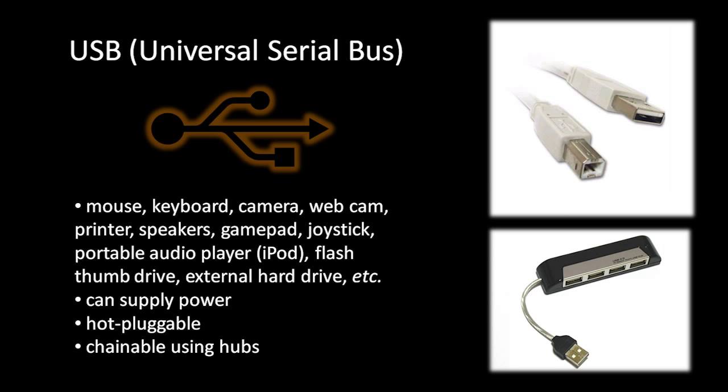Hubs can also come in handy because they can act like extension cords. So for example, if the cords of your mouse and keyboard aren't quite comfortably reaching your computer system, you can solve the problem by using a hub. In fact, it's very common for monitors to have a USB hub built in. So you will have a USB connection running from your computer to your monitor, and then on the side of your monitor you'll have some number of USB ports into which you can plug any device, like your keyboard or mouse.